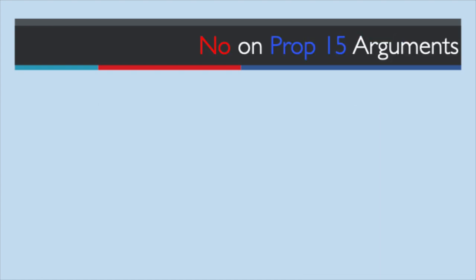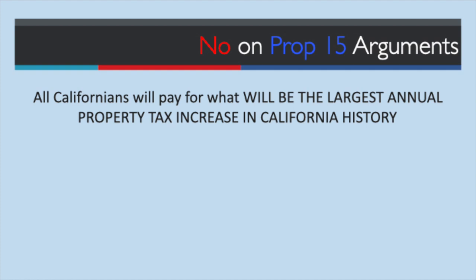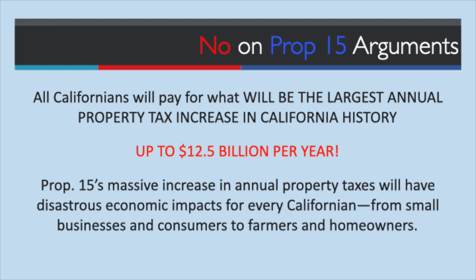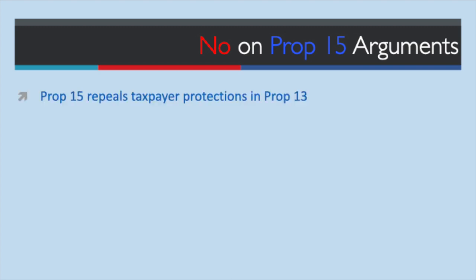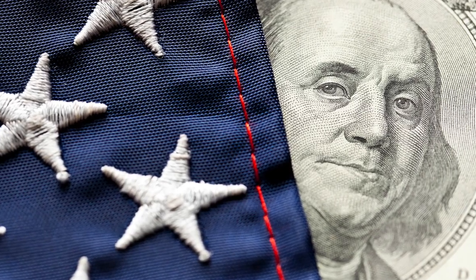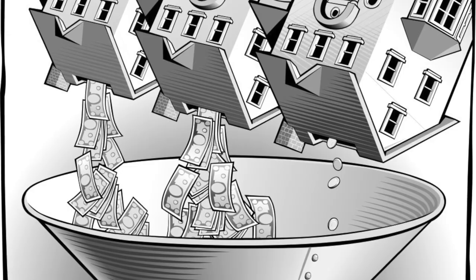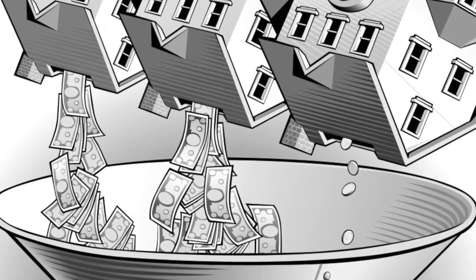From the NO on Prop 15 side: all Californians will pay for what will be the largest annual property tax increase in California history — up to $12.5 billion per year. Prop 15's massive increase will have disastrous economic impacts for every Californian, from small businesses to consumers to farmers and homeowners. Prop 15 repeals taxpayer protections in Prop 13, which have kept property taxes affordable by capping them and limiting annual increases, providing taxpayers certainty they can afford their property taxes now and into the future.